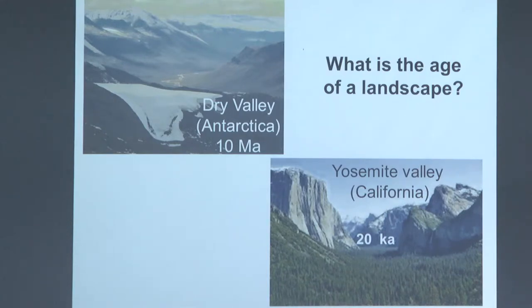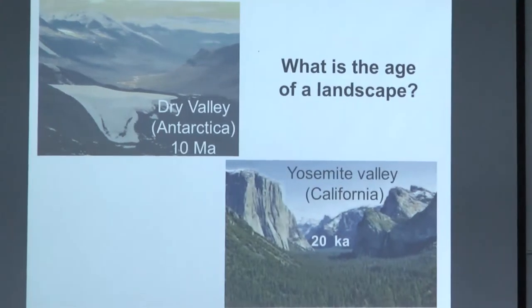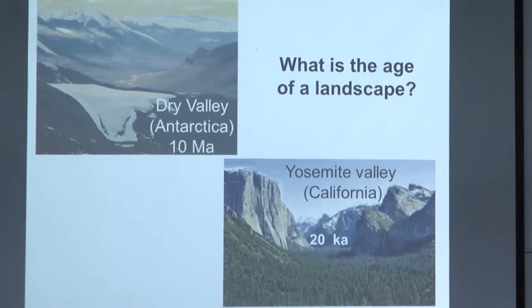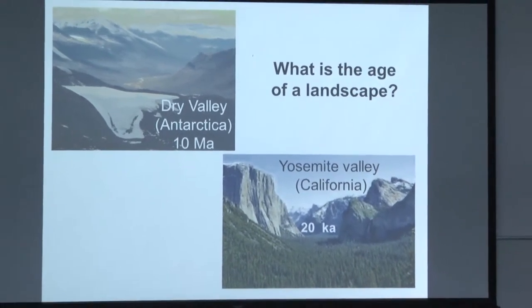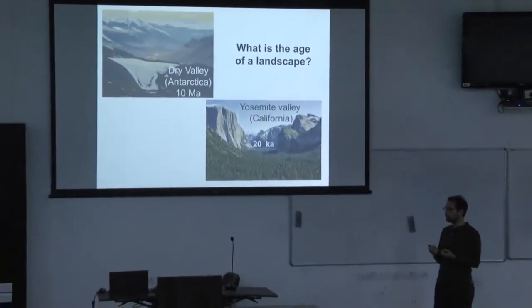For example, Yosemite Valley was abandoned and partly carved during the Last Glacial Maximum, around 20,000–25,000 years ago. In contrast, the dry valleys in Antarctica are one of the places on Earth with the lowest erosion rate, and if you go there you can end up with exposure ages of several million years. Similar landscapes in some ways, but very different ages.